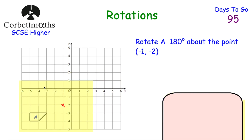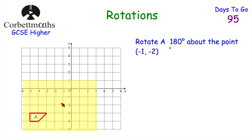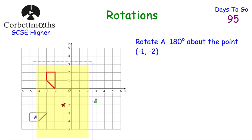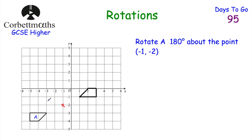I would get my tracing paper, put it on top, making sure it's either landscape or portrait, and draw over the centre of rotation and over the trapezium. We've been asked to rotate this 180 degrees — it hasn't specified clockwise or anticlockwise because it doesn't matter; both land in the same position. Put your pencil on the centre of rotation and turn the tracing paper through 180 degrees — that's 90 to portrait, then another 90 back to landscape. And that's it — we've rotated A 180 degrees about the point negative 1, negative 2.